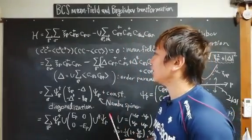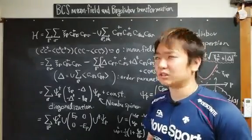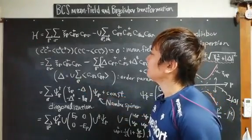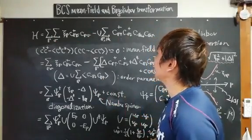So here we start from the so-called BCS Hamiltonian. The first term is the kinetic energy of electrons and the second term is the attractive interaction.